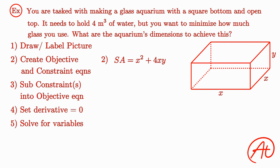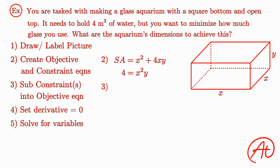Now that we have the objective function, let's find the constraint equation. In this problem, we are constrained by the requirement to hold a volume of 4 cubic meters of water. The volume of our shape is length times width times height, so we find that our constraint equation is 4 equals x squared times y. Again, to minimize our objective function, we want to take the derivative and set that equal to zero. But our objective is composed of two variables, so we need the constraint equation to get rid of one of them. For this problem, let's isolate y. We can divide by x squared to get that y equals 4 over x squared.